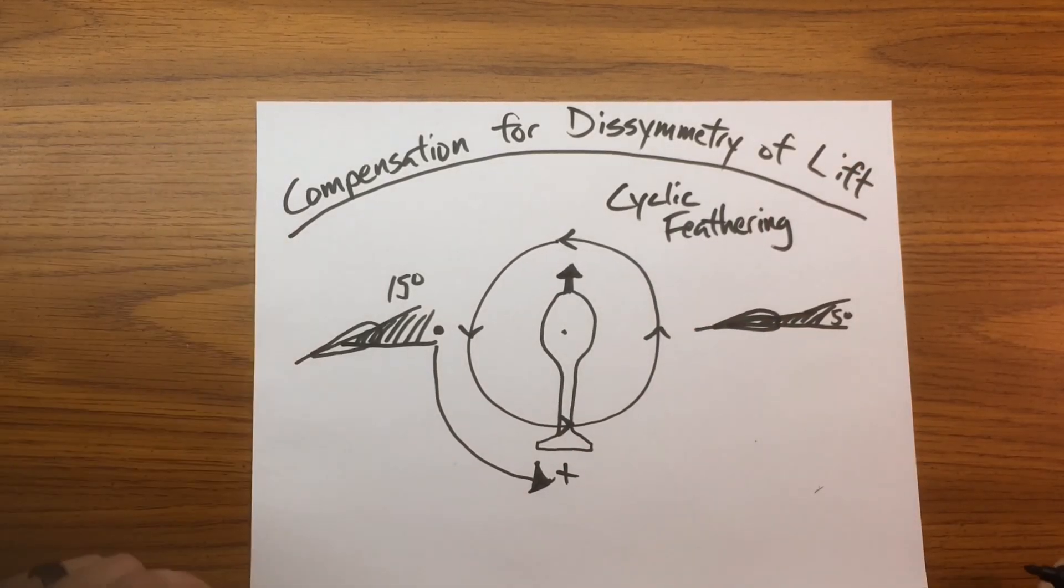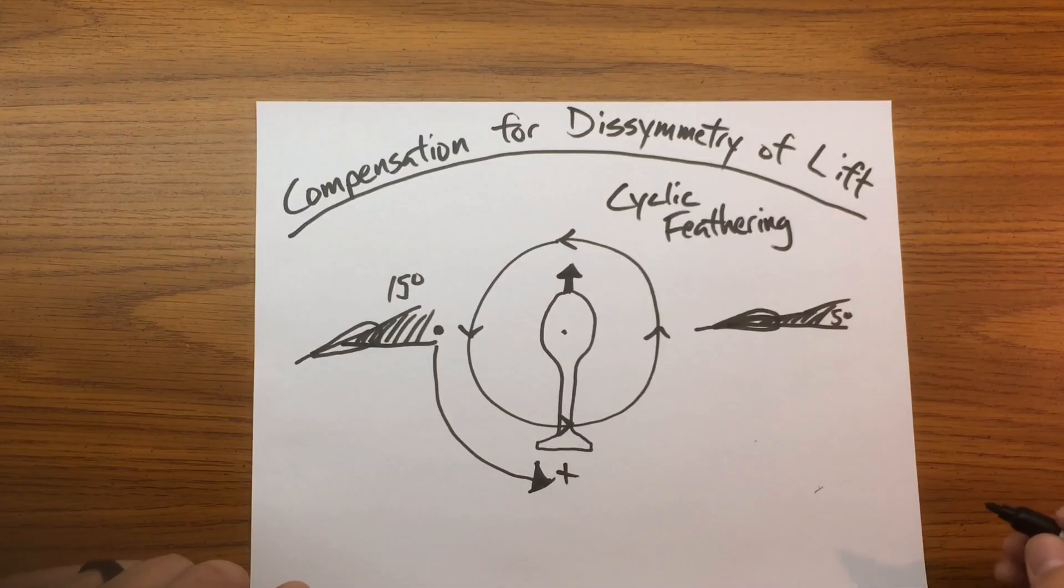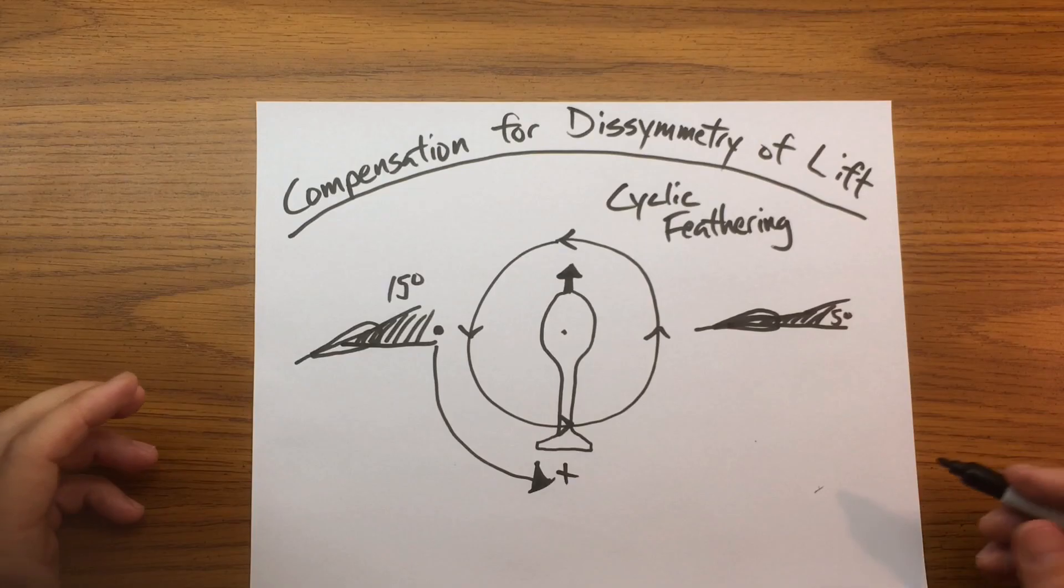Now this concludes my discussion on the compensation for dissymmetry of lift. We're using blade flapping and cyclic feathering to increase the lift of the retreating blade and decrease the lift of the advancing blade.